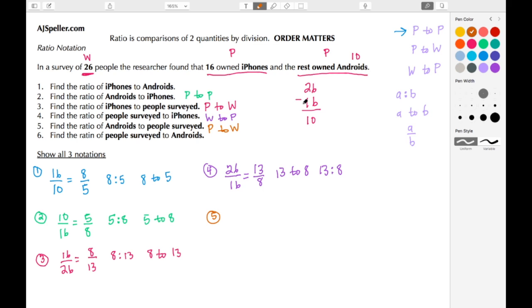The Android users is 10, the entire group of people surveyed is 26. We take half of both numbers because they're even. Half of 10 is 5, half of 26 is 13. This can be also written as 5 colon 13 and as 5 to 13. And for our last one, number 6, we need to find the ratio.